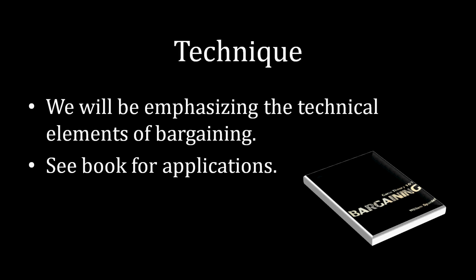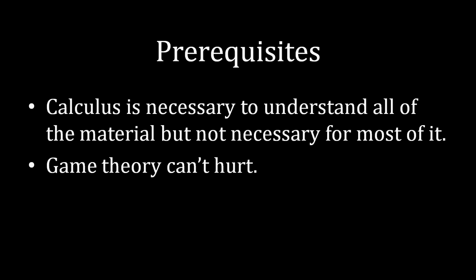Because we're talking about technical elements, I need to be certain about what prerequisites are required. I don't actually expect anyone taking this course to be very well off in terms of prerequisites. Calculus will be necessary to understand all of the material at one point, but knowing calculus is not necessary to understand most of it. If you don't know calculus, you'll still be able to get 98% of this course, and where I do use calculus, I'll explain in words what's going on. Also, game theory can't hurt — at its core, bargaining theory is a study of game theory — but you do not need a game theory background, because I'll cover the parts you need to understand the technical materials.